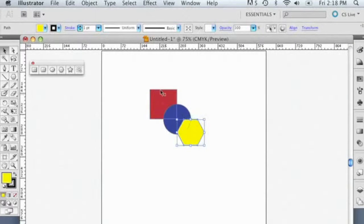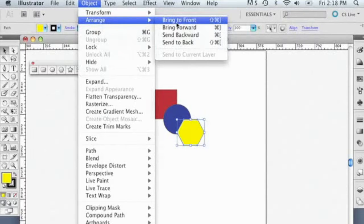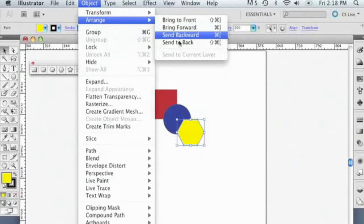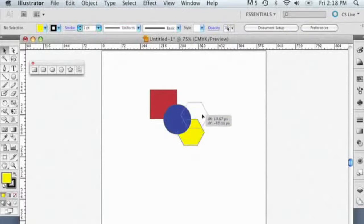Now I can change the stacking order of these, or what's on top, by going to the Object menu and choosing Arrange. I have the yellow object selected. I can bring it to the front where it already is, bring it forward, send it backwards, or send it to the back. If I send it to the back, it's now actually behind the other two objects.